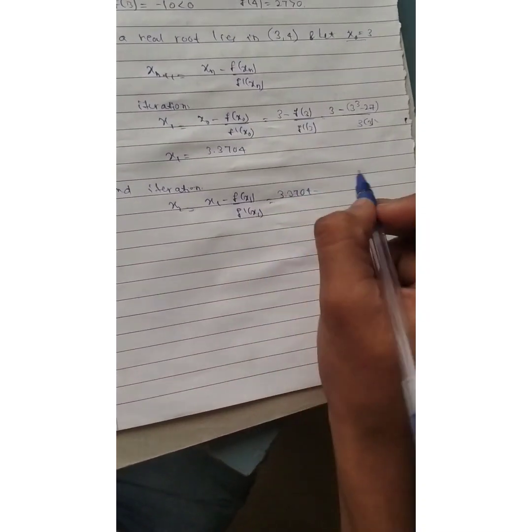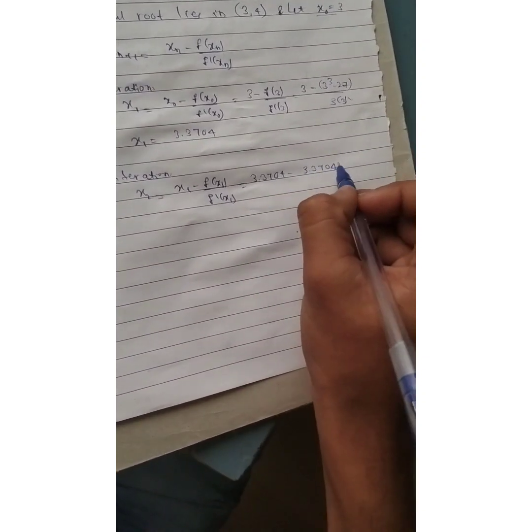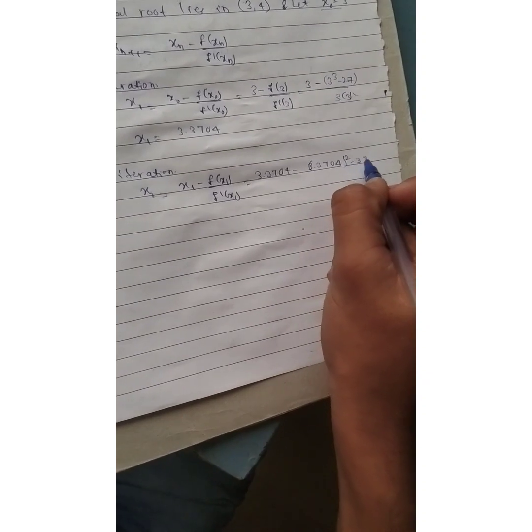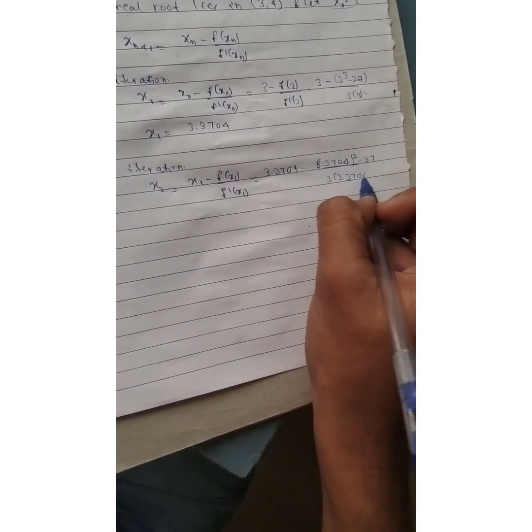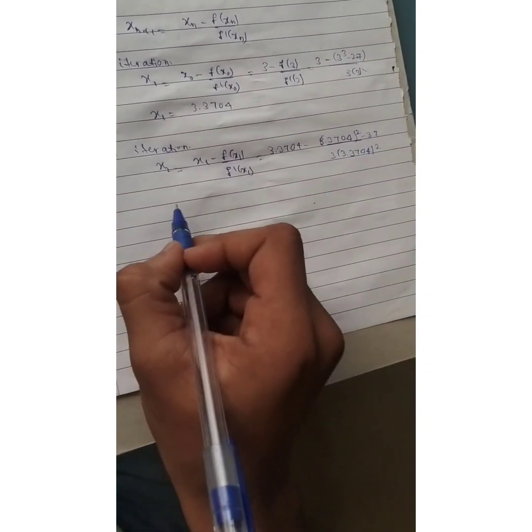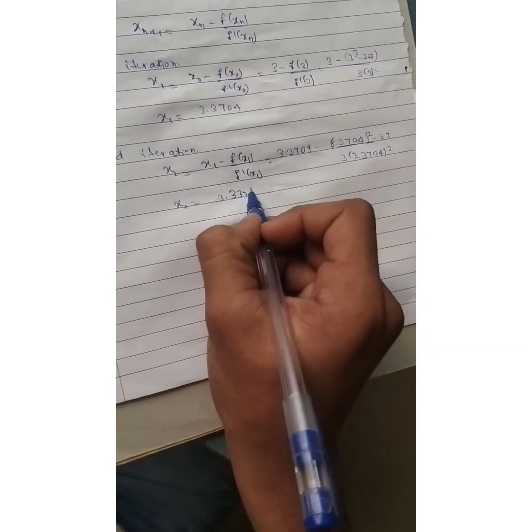Second iteration: x2 is equal to x1 minus f of x1 divided by f dash of x1, which gives 3.3704 minus 3.3704 whole square minus 37 divided by 3 into 3.3704 square. That is, value x2 is equal to 3.3327.